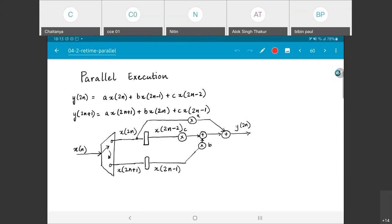The order in which I add them does not really matter. And finally, what I get is y of 2n as an output. And if you look at this, you will notice that once again if I try to do a critical path analysis, this is once again Tm plus 2Ta, and so is this.